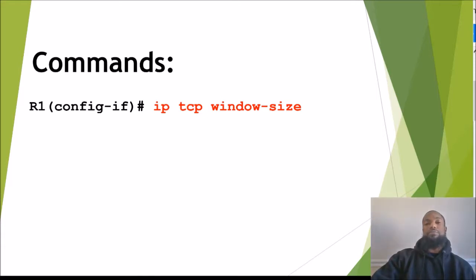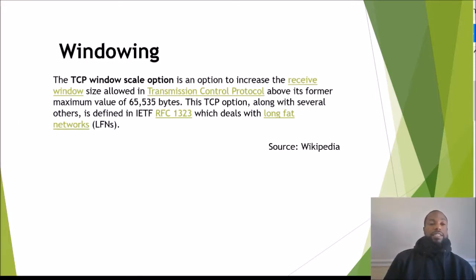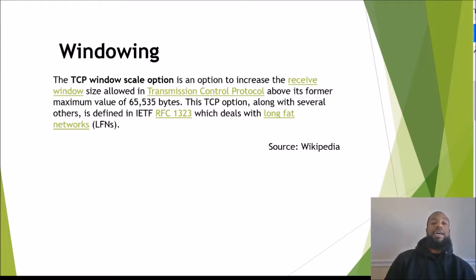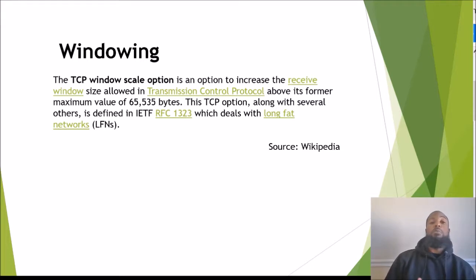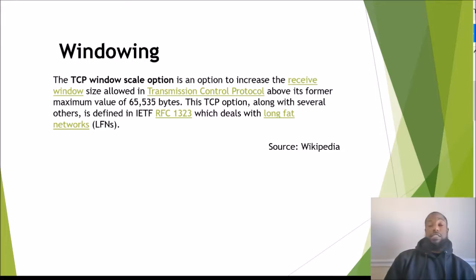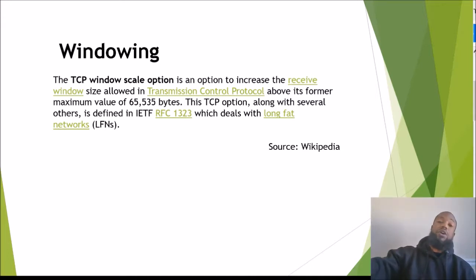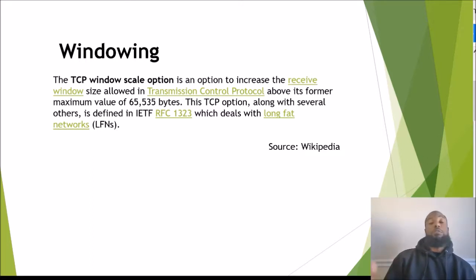The TCP window scale option is an option to increase the receive window size allowed in TCP above its former maximum value of 65,535 bytes. Now with window sizing, you can send up to a whole gigabyte of data before you want to slow it down or speed it up.